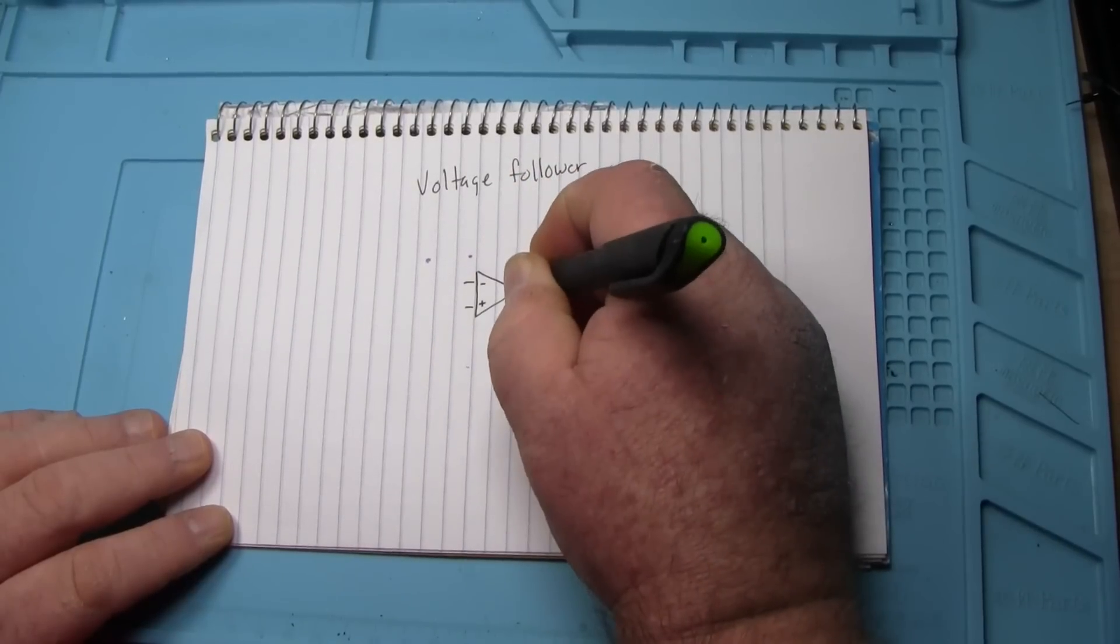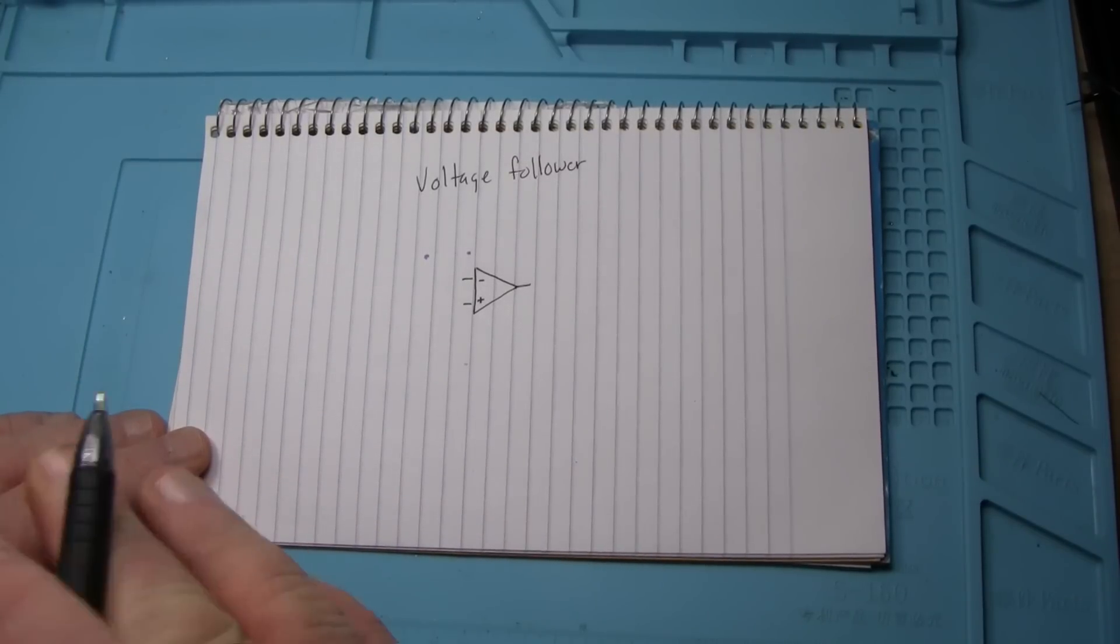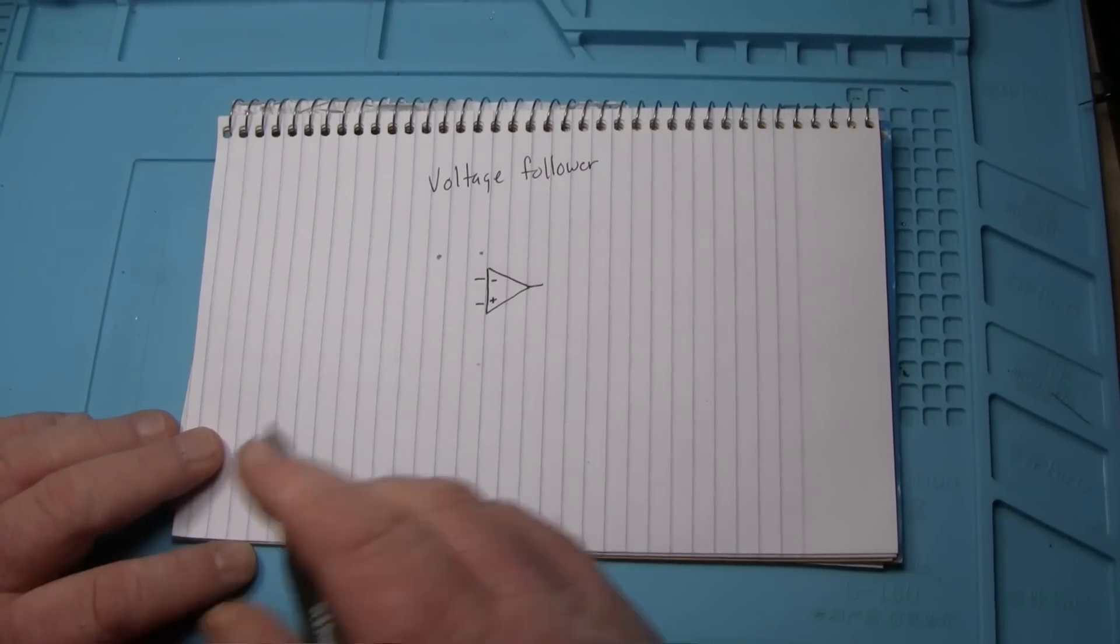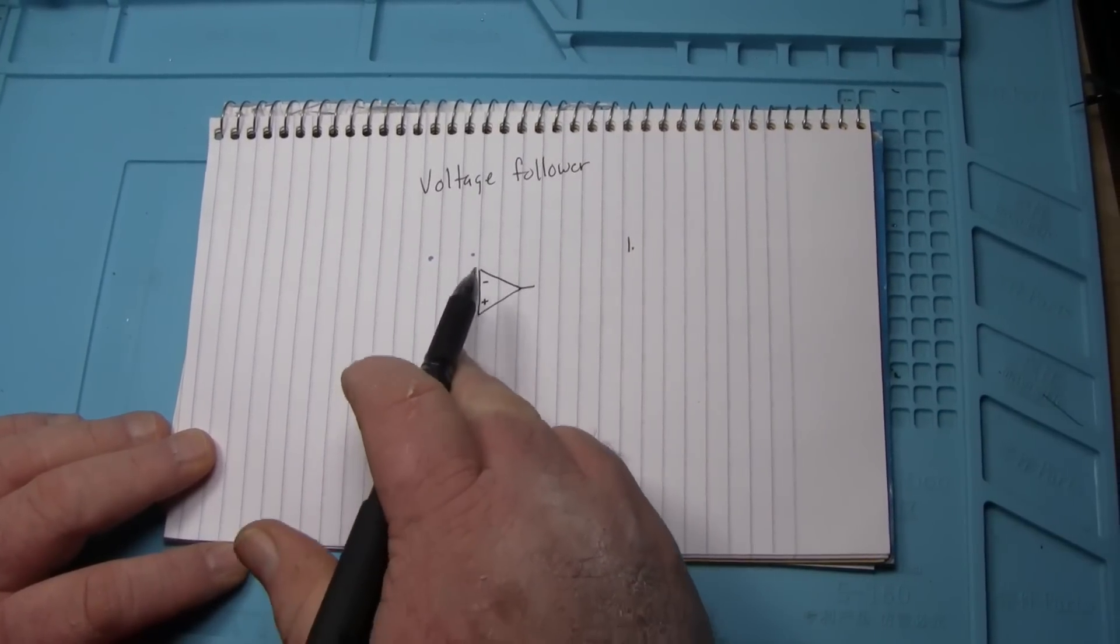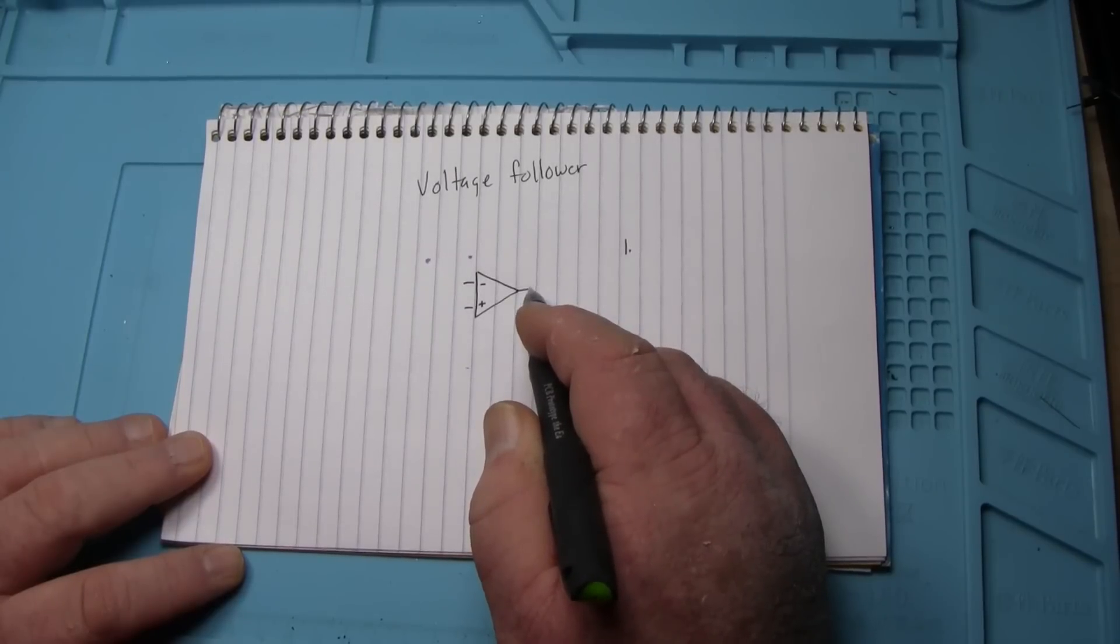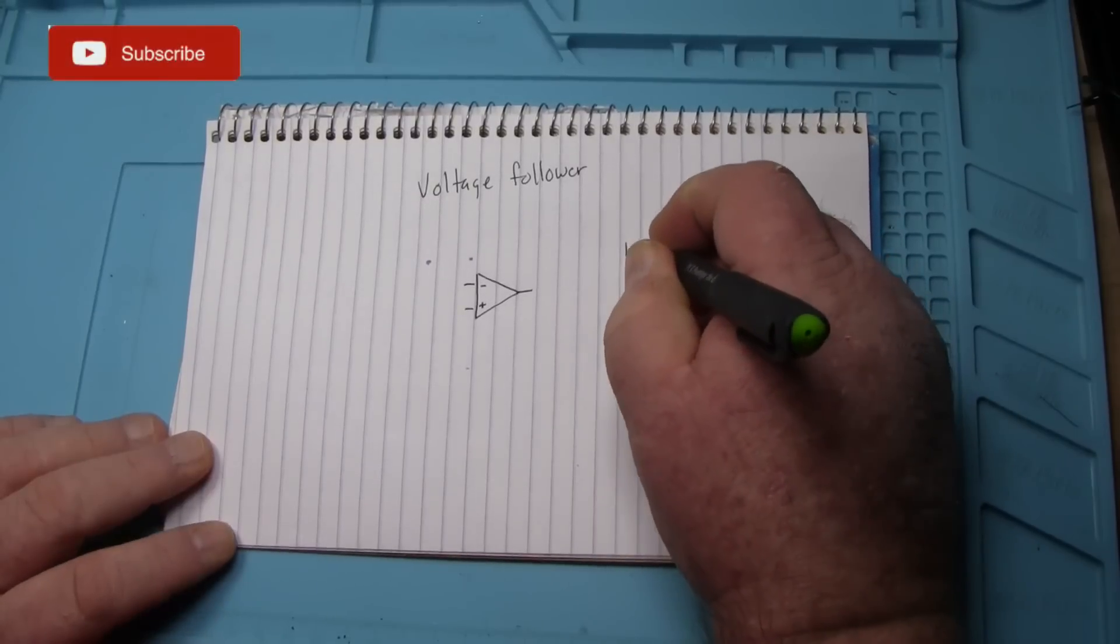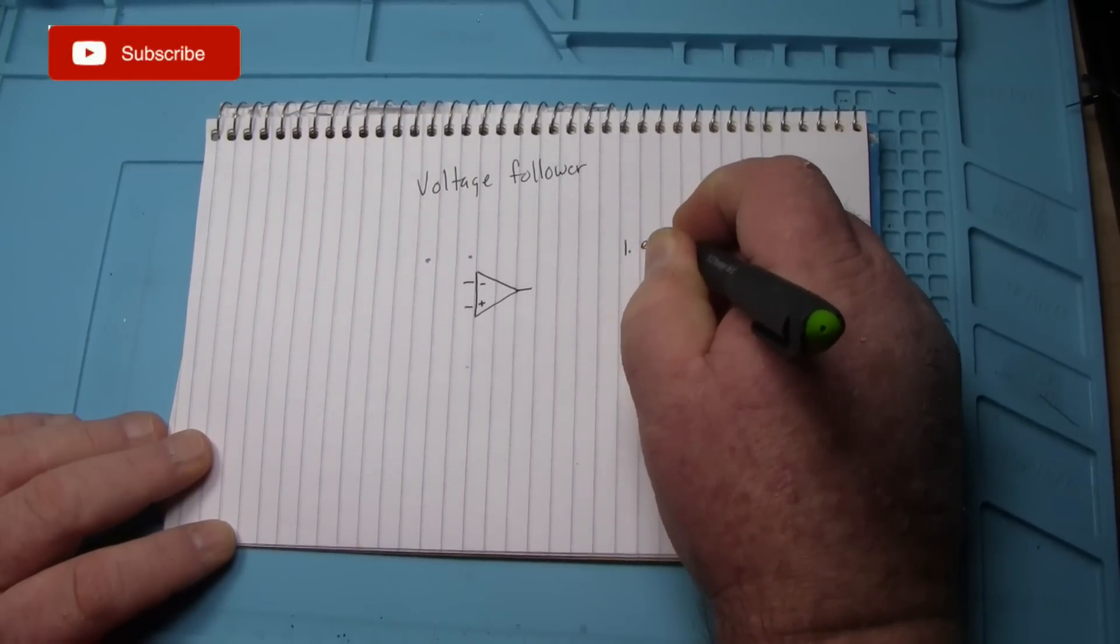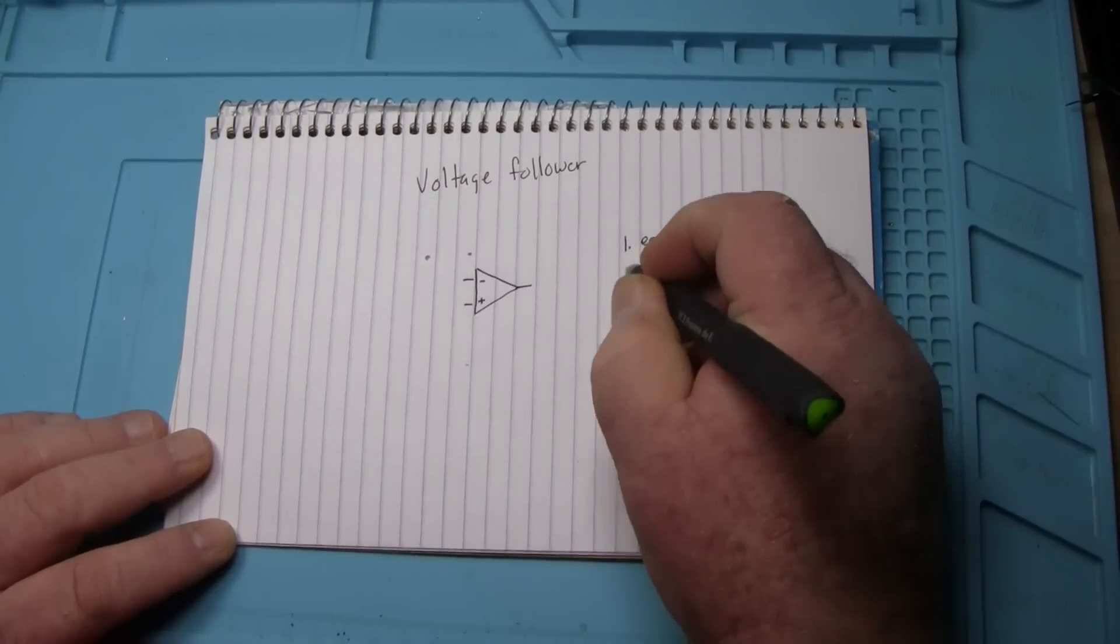And we have our output and we're going to take advantage of two of the most important features of the op-amp. Number one, the op-amp will do whatever is necessary to drive the output to make these two inputs equal. So we'll say number one is equalize inputs.